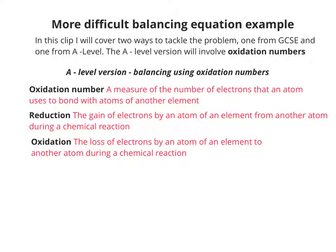So first of all, let's just bring out some basic definitions. Oxidation number is the measure of the number of electrons an atom uses to bond with atoms of another element. And reduction is the gain of electrons by an atom of an element from another atom during a chemical reaction. Oxidation is the loss of electrons, so it's the opposite.